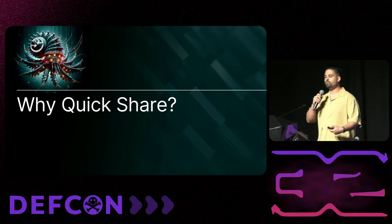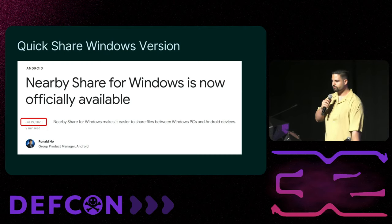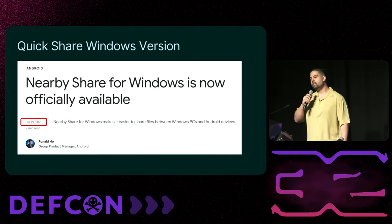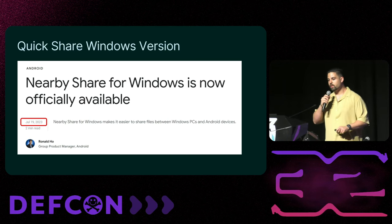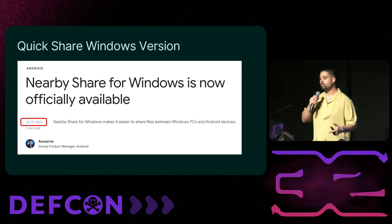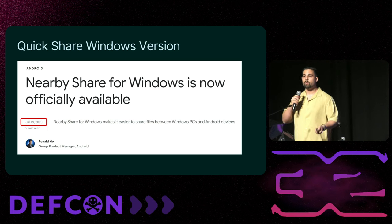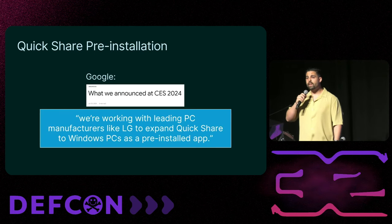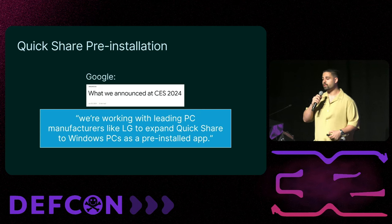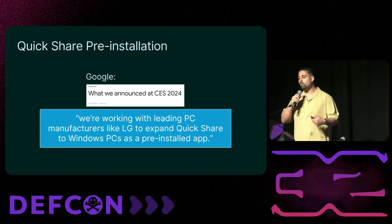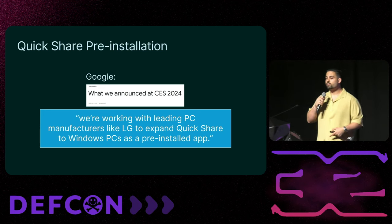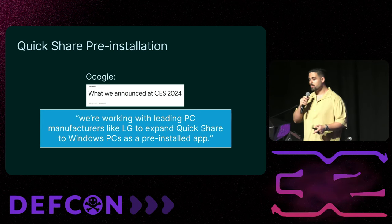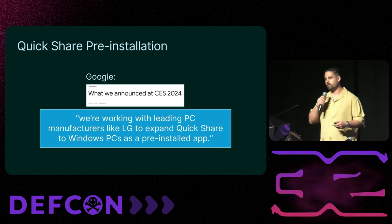Why did we choose to target QuickShare? Last July, Google officially released a Windows version of QuickShare, allowing file sharing between Windows computers and any other device with QuickShare. An interesting fact from Google's announcement at CES is that they are working with leading PC manufacturers like LG to expand QuickShare to Windows PCs as a pre-installed app, making QuickShare for Windows a much more attractive target.